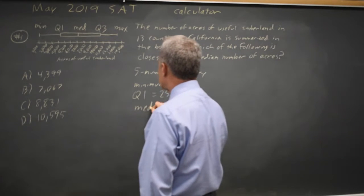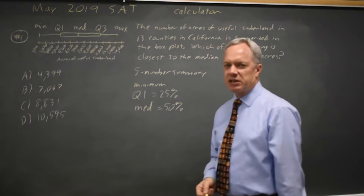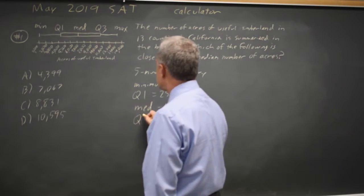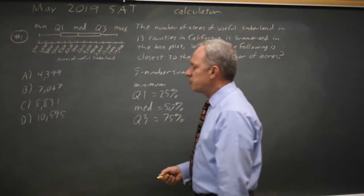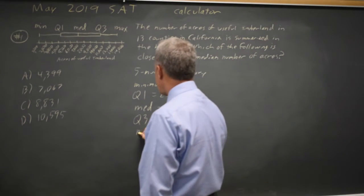The median, which is the 50th percentile, the middle number, or if there's an even number of observations, midway between the two middle numbers. Quartile three, which is the 75th percentile, meaning 75% of the observations are below and 25% are above, and then the maximum.